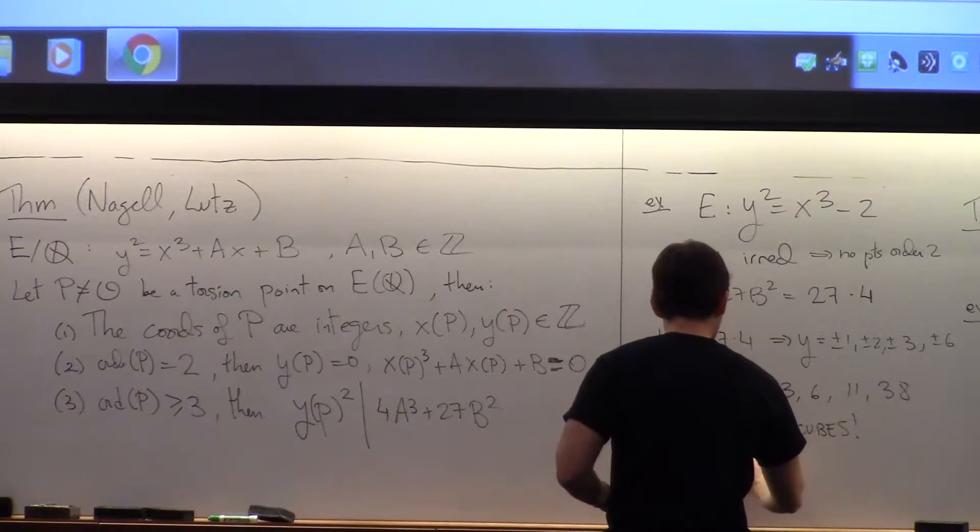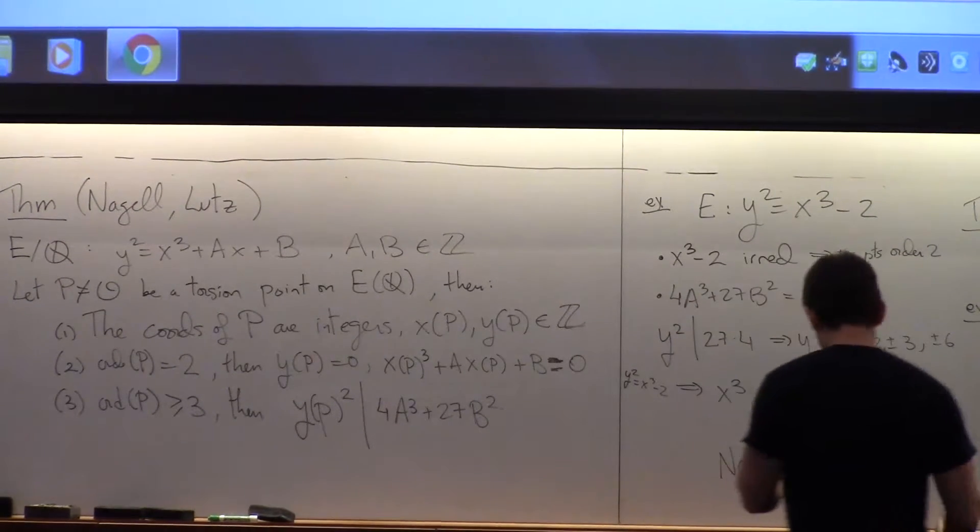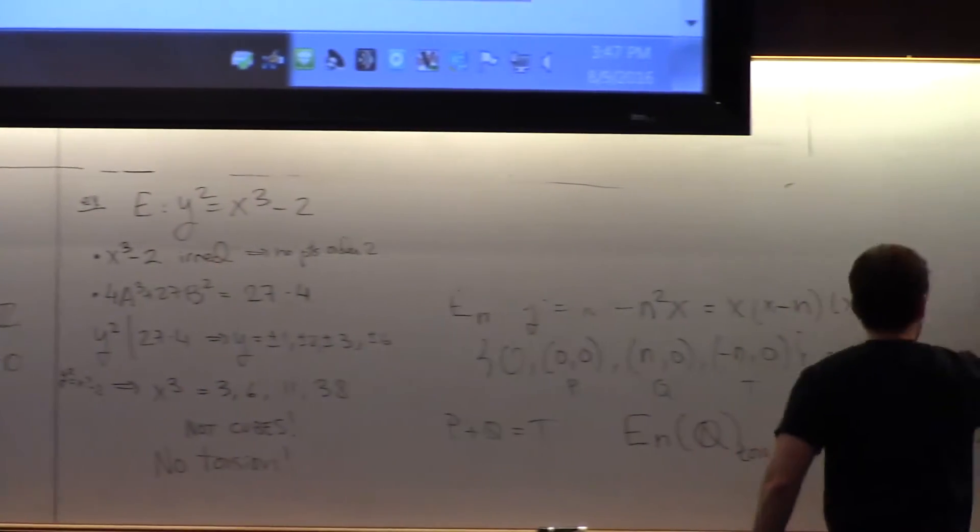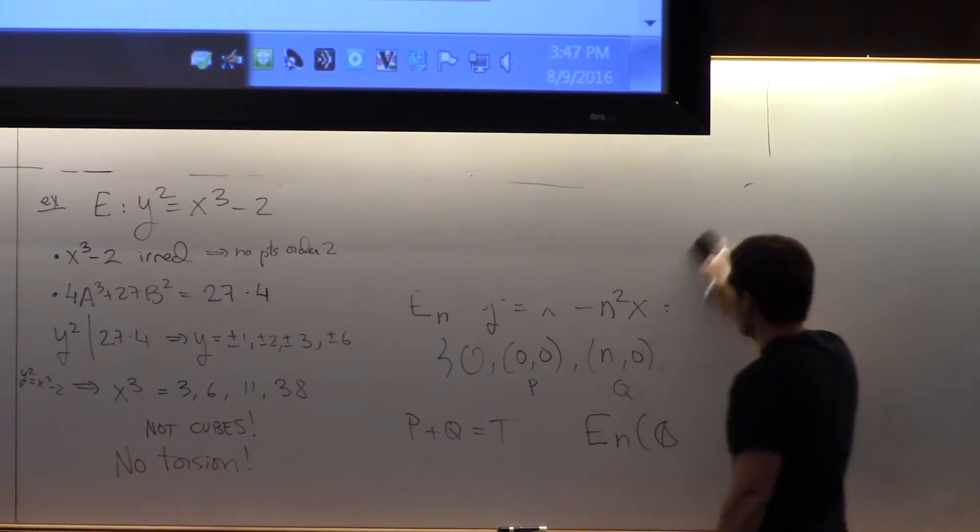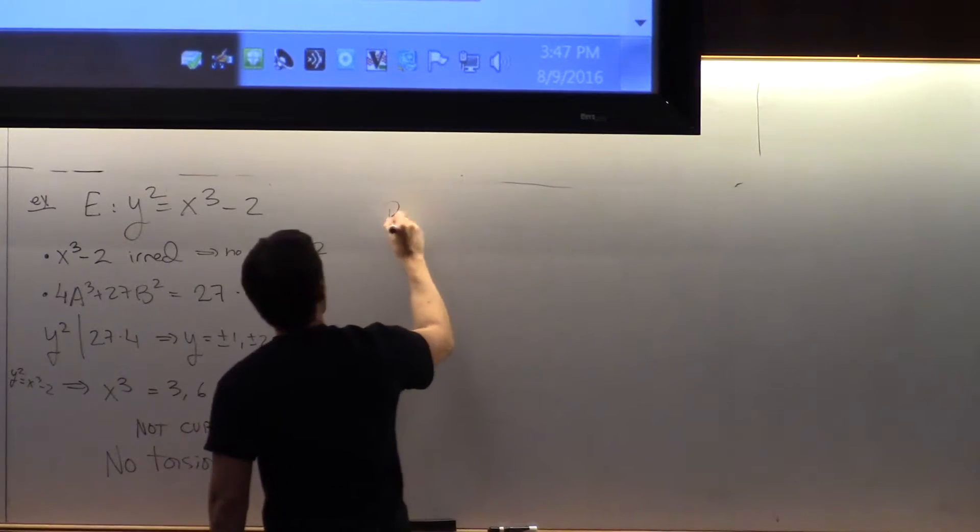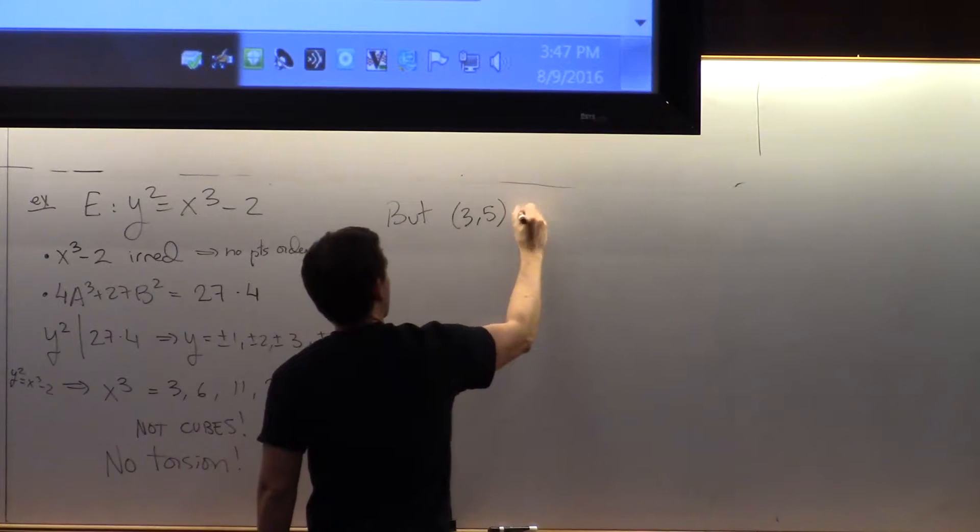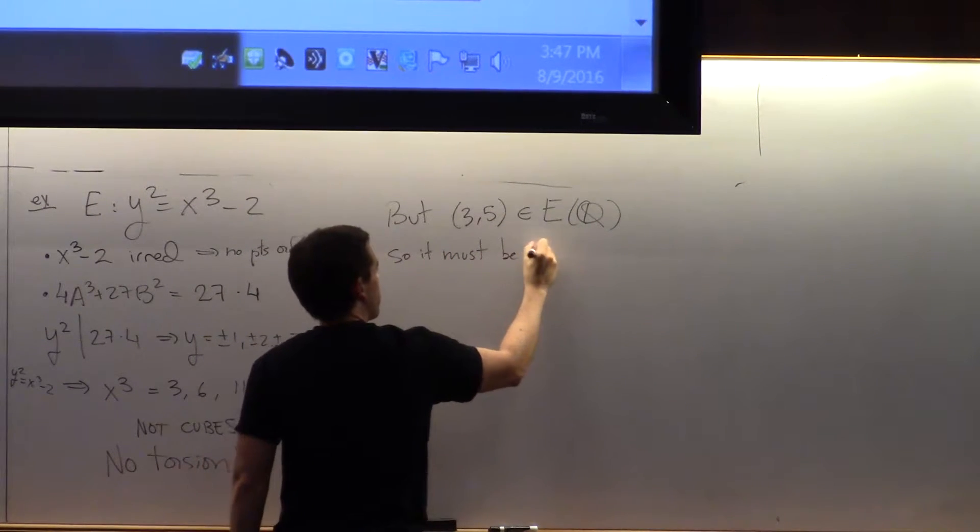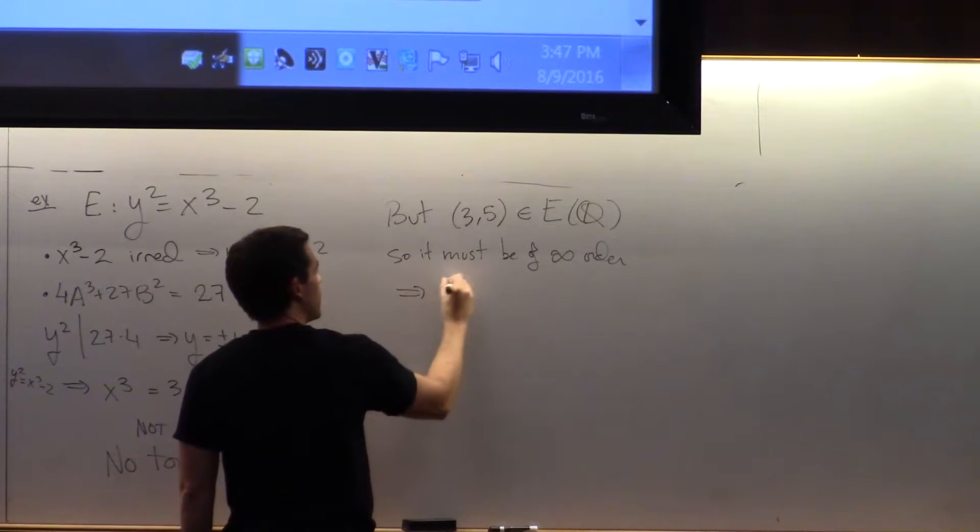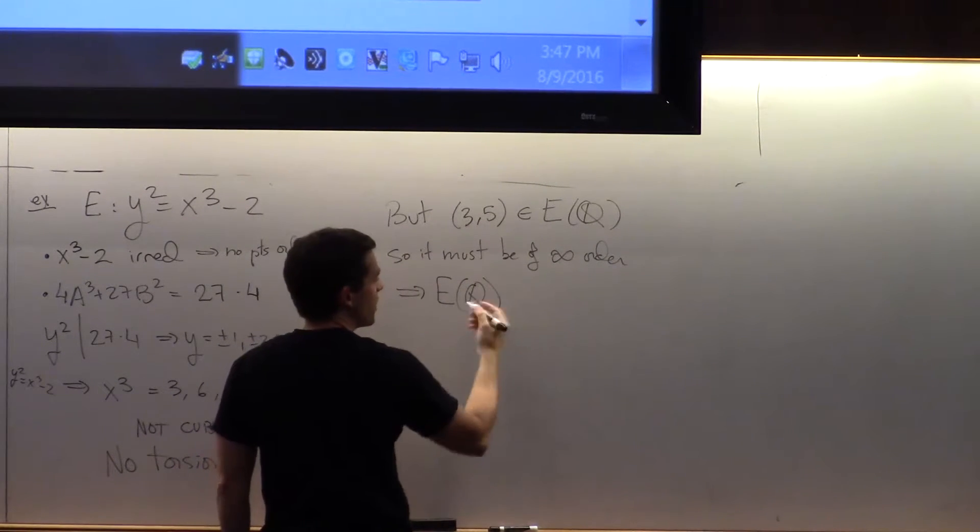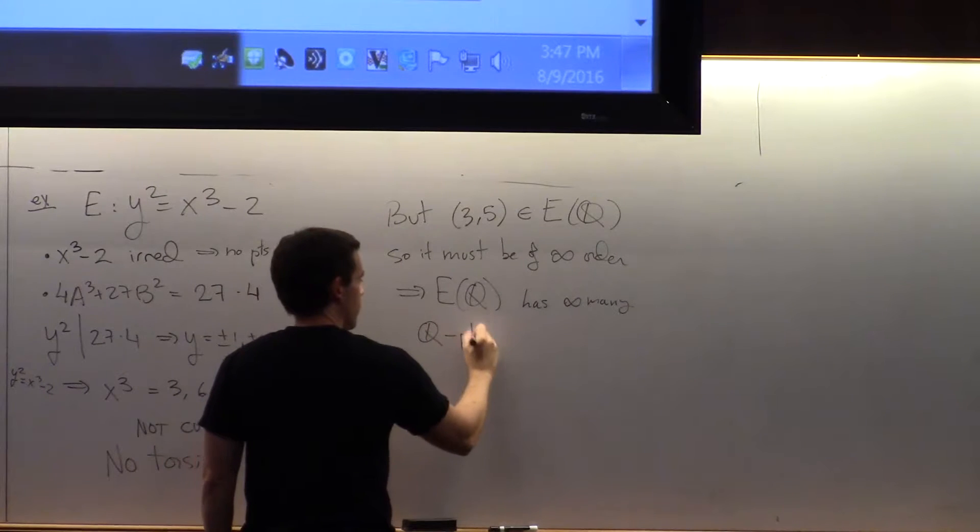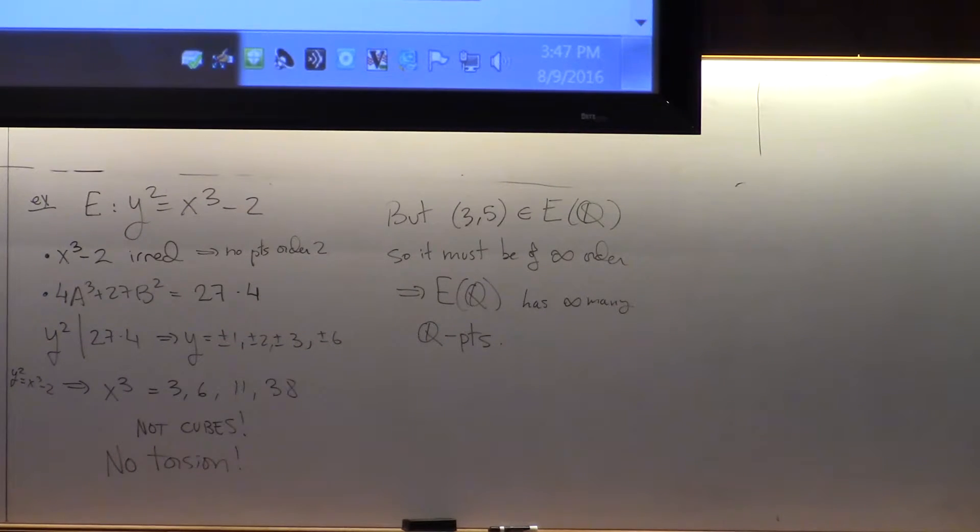So this is impossible. So no torsion. But I have a point on the curve, so that point must be of infinite order. And that alone tells me that this elliptic curve has infinitely many points, which is something not trivial at all to prove that there are infinitely many points on one given curve of genus higher than 1.